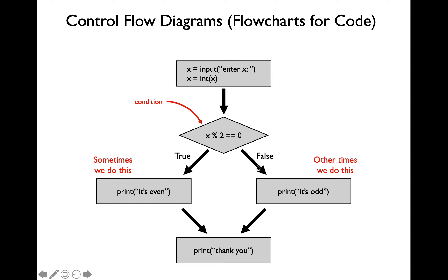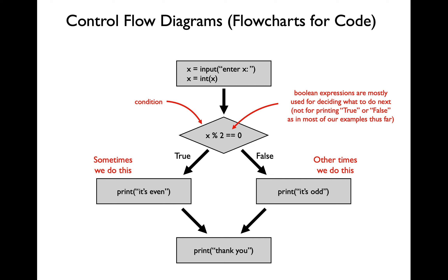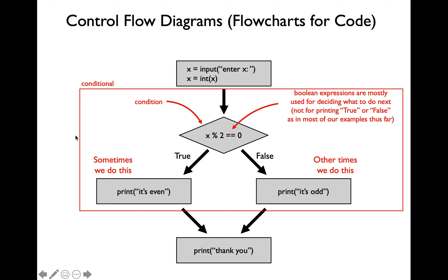When the condition evaluates to false, your program will go through alternate execution. So the main concept about conditionals is that sometimes you'll be going through conditional execution and sometimes alternate execution, depending on how your condition evaluates. Boolean expressions are extensively used as part of conditionals and loops in order to decide what to do next with respect to the lines of code that you want to execute. The entire part including the condition, conditional execution, and alternate execution is called the conditional.